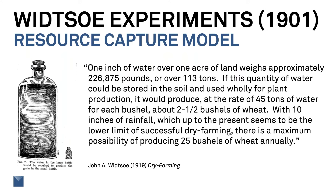Here's an example of the way he applied the water resource capture model for dry farming. The picture on the left illustrates the transpiration efficiency — the big bottle on the left is the water required to produce the little bit of grain in the bottle on the right. He said one inch of water over one acre of land weighs approximately 226,875 pounds, or over 113 tons. If this quantity of water could be stored in the soil and used wholly for plant production, it would produce, at the rate of 45 tons of water for each bushel, about two and a half bushels of wheat.